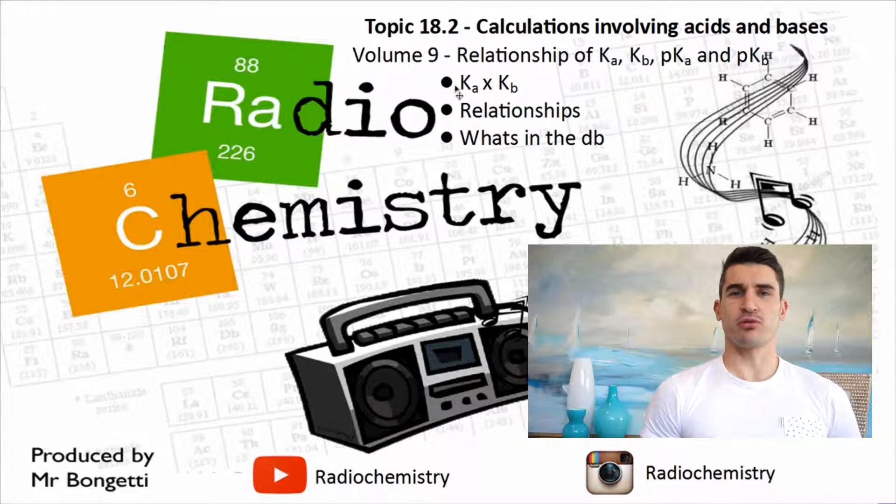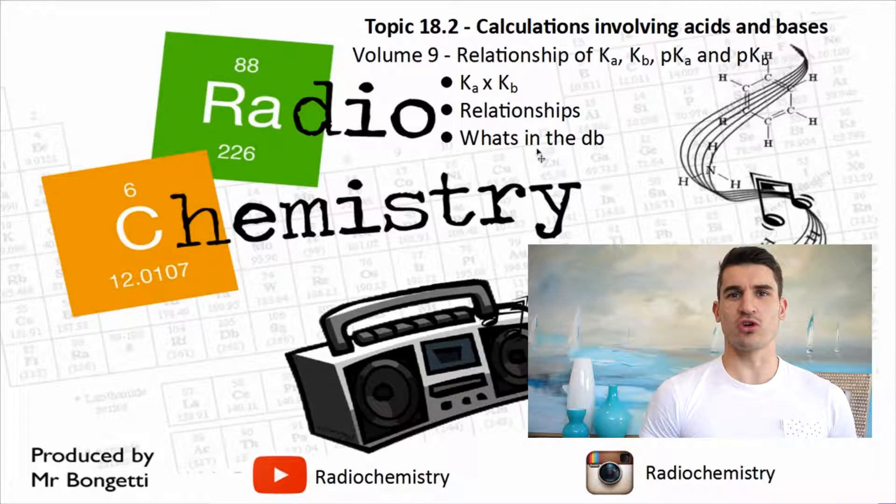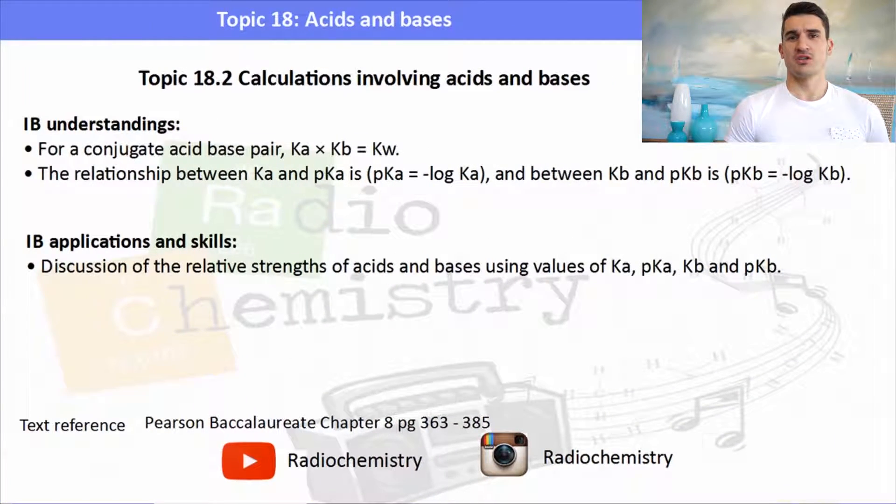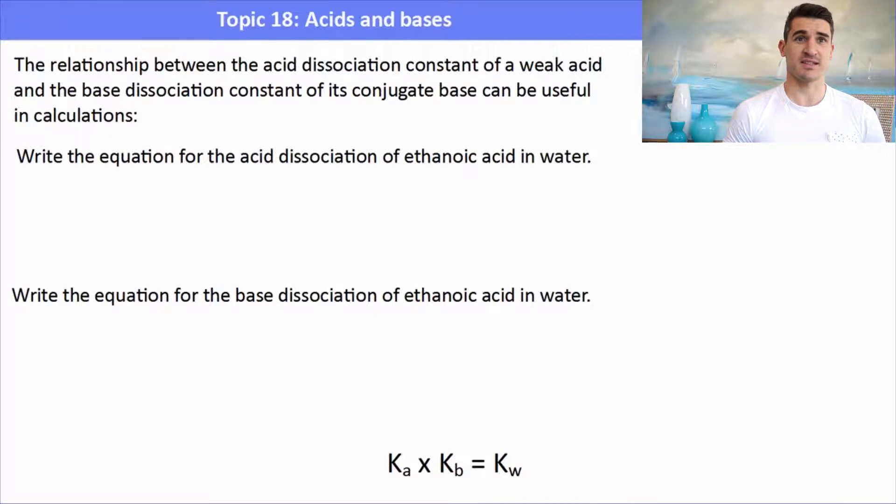Alright, volume 9. We look at the product of Ka times Kb, we talk about some of their relationships, and then we have a look what's in the data book. So the IB understandings for 18.2 is that Ka times Kb equals Kw, and then the relationship between Ka and pKa is the negative log to the base 10.